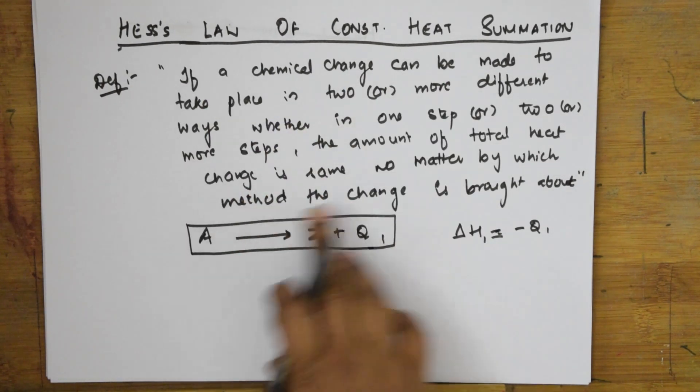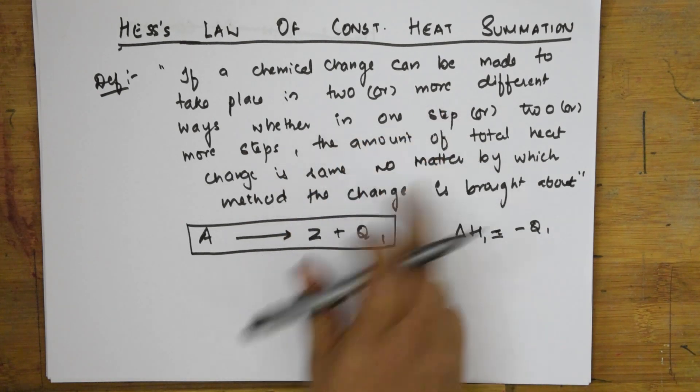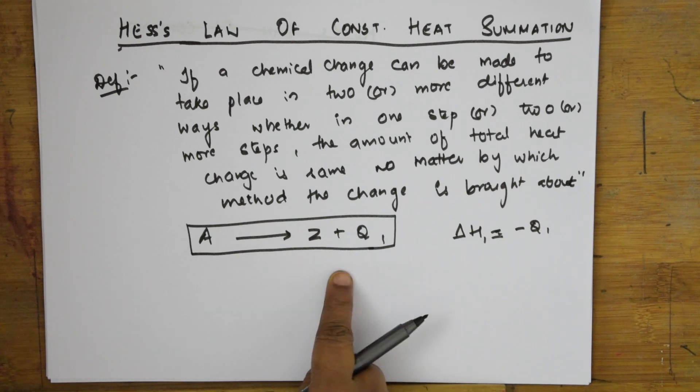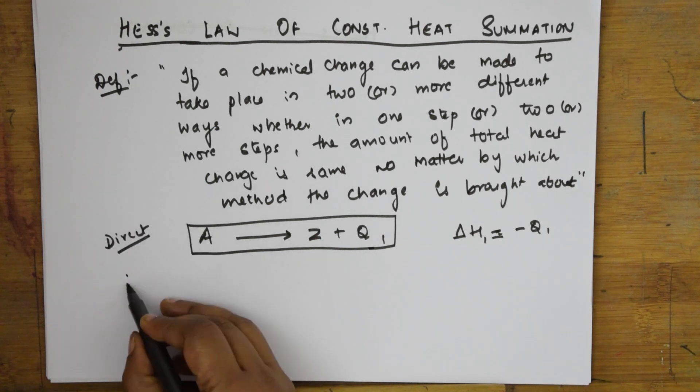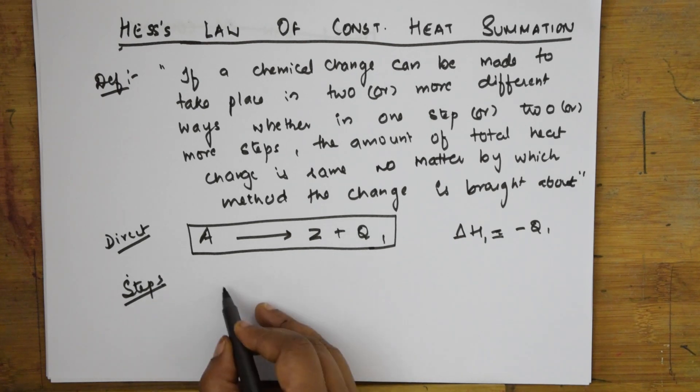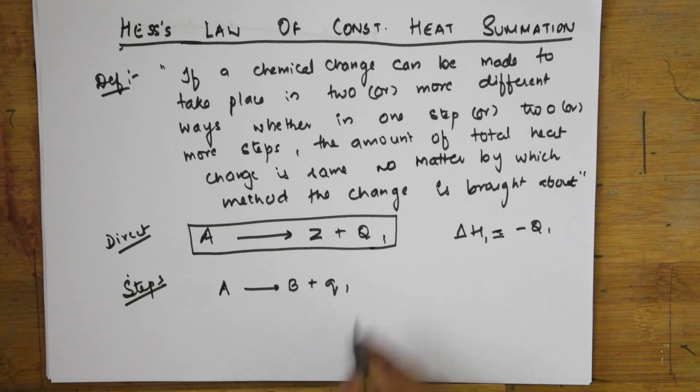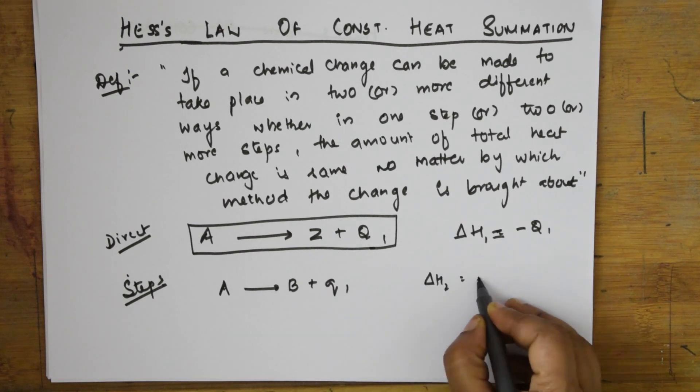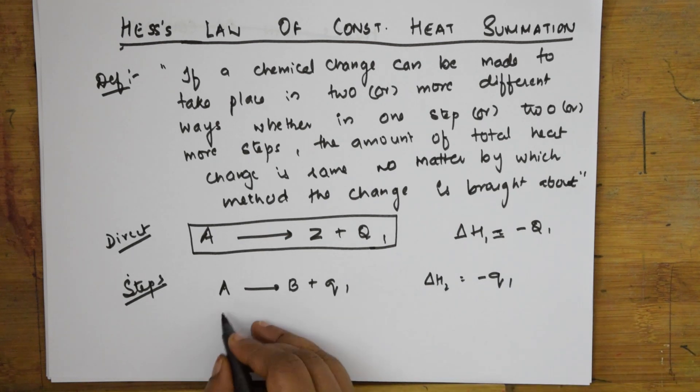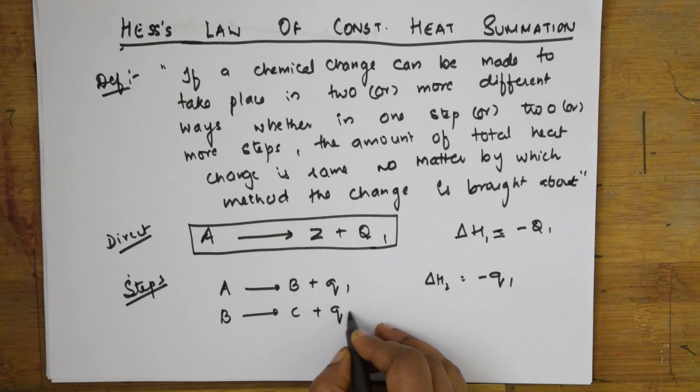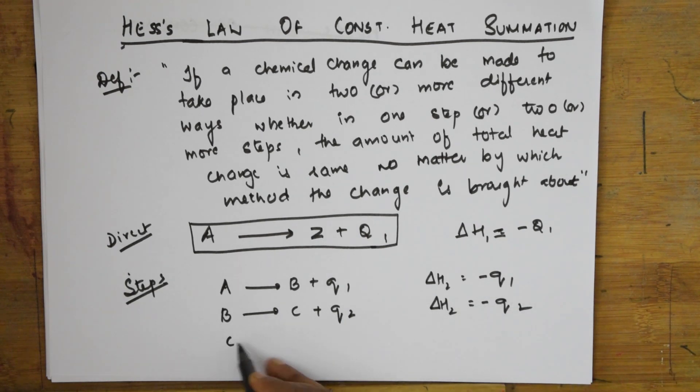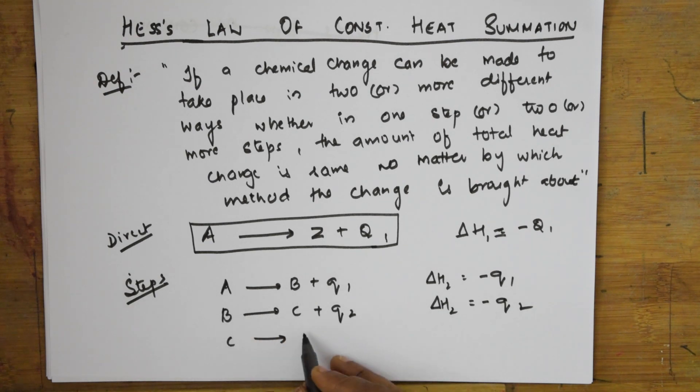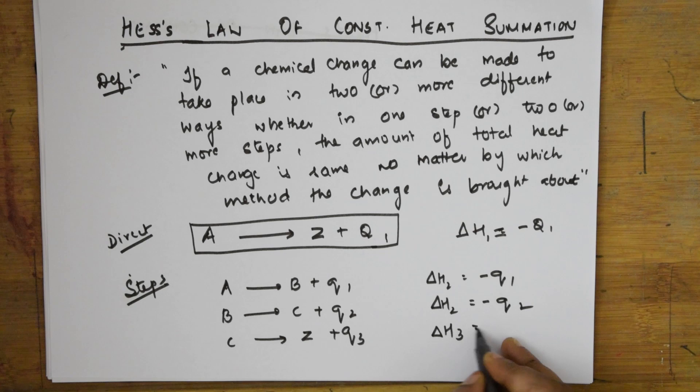Suppose the same reaction occurs step by step instead of directly. If a chemical change takes place in two or more different steps, the total energy change will be the same. Let me show the steps. A is converting to B, delta H1 equals minus Q1. B converting to C, delta H2 equals minus Q2. C is converting to Z, the final step, delta H3 equals minus Q3.